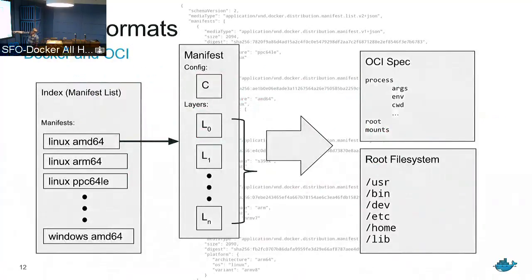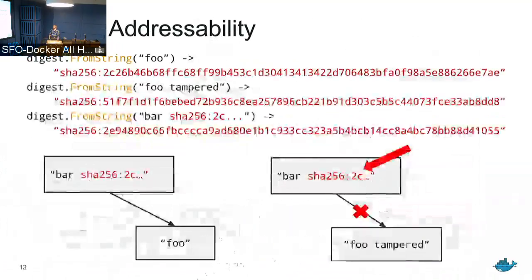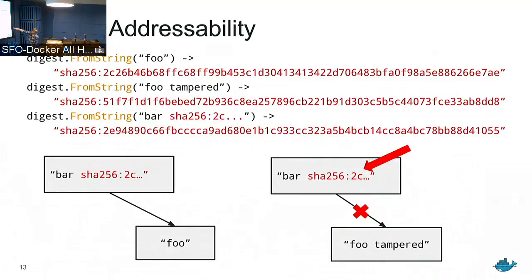Each one of these boxes is represented by a JSON blob. The question is how do we identify that JSON blob? In the OCI format and the Docker format we identify everything by a digest and use content addressability. Using the go-digest package from Open Containers, we have the digest of 'foo' and an example of a digest of 'foo' that's been tampered with — we can see they're different, so we can tell the difference in the content because the digests are different.